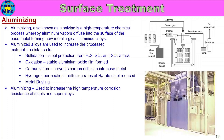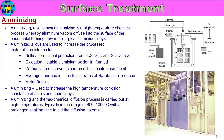Aluminizing improves the high-temperature corrosion resistance of steels and superalloys. The aluminizing thermochemical diffusion process is carried out at high temperatures, typically in the range of 800 to 1000 degrees centigrade, with prolonged soaking time to aid diffusion.